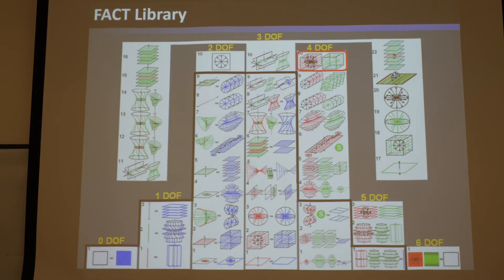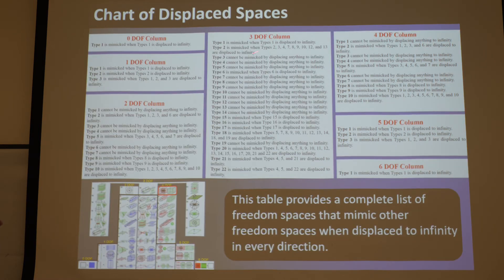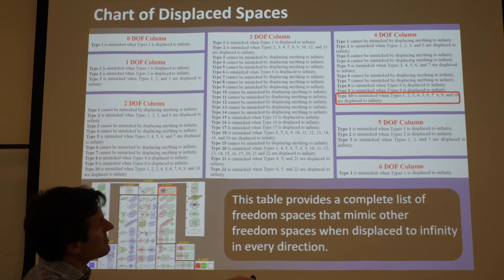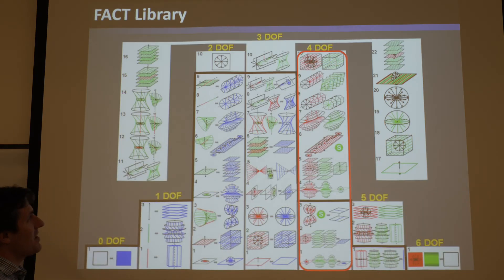Now suppose we wish to achieve four degrees of freedom: three translations and a rotation. We look it up and find that it manifests as every rotation in a sphere, a box of parallel rotations, and a box of parallel screws of all pitches. We find it in the chart and see it's outside the parallel pyramid — so if we're going to design a parallel system to achieve that, we can only mimic it. We look at 4-DOF type 10 in the chart: it says it's mimicked when types 1 through 10 are displaced to infinity, essentially everything in this column.